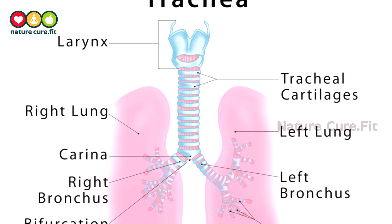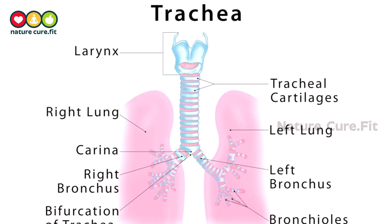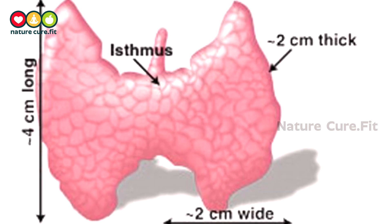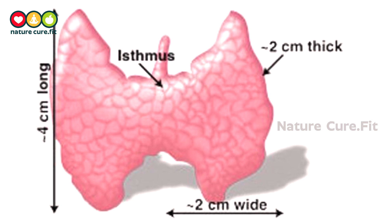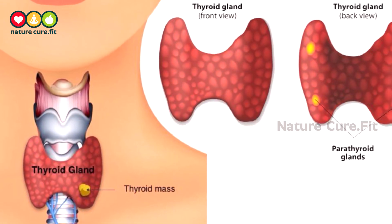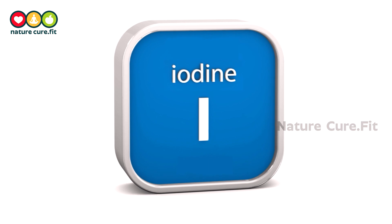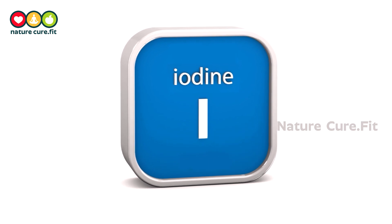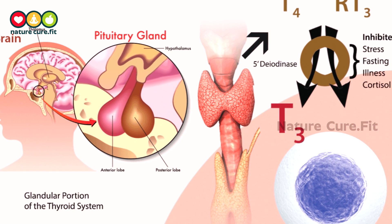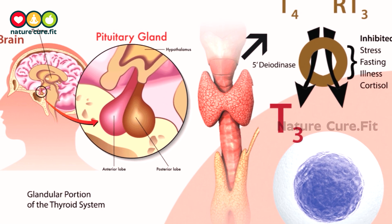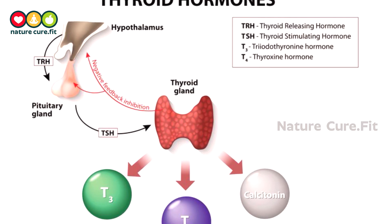The thyroid gland is located below the Adam's apple, wrapped around the trachea windpipe. A thin area of tissue in the gland's middle, known as the isthmus, joins the two thyroid lobes on each side. The thyroid uses iodine to produce vital hormones, and the function of the thyroid gland is regulated by a feedback mechanism involving the brain.